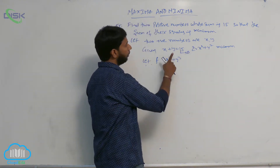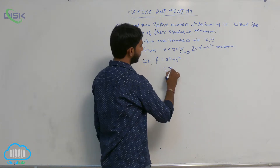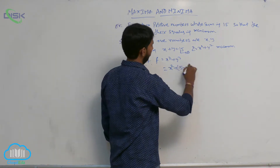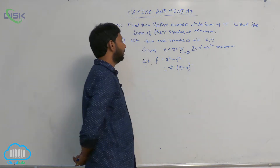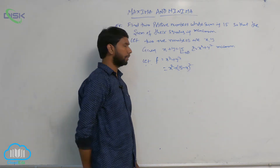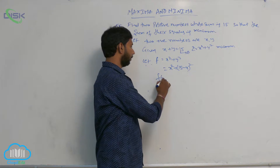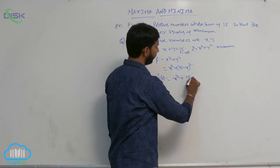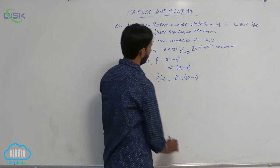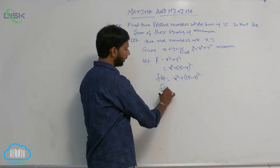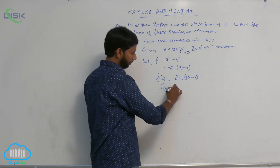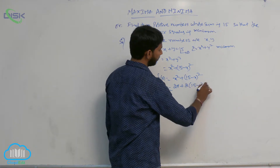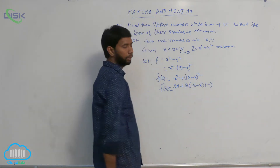Eliminate y from the first condition. So f of x is equal to x squared plus (15 minus x) whole squared. Then the first derivative is f'(x) equal to 2x plus 2(15 minus x) times its inner derivative, which is minus 1.